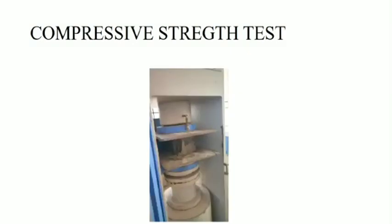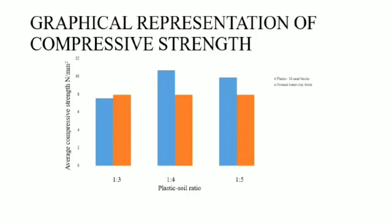Now we are going to find out the compressive strength of the plastic brick. It is done in a CTM machine. Here is a graphical representation of the compressive strength. From the bar graph, we could infer that the plastic to M-sand ratio proportion of 1:4 has the maximum amount of compressive strength.